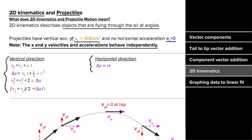Since the vertical acceleration is constant, you can use the kinematic formulas to solve for quantities in the vertical direction — but you can only plug in vertical quantities into these equations. Since the acceleration is zero in the x direction, you can simply use distance equals rate times time to relate quantities in the x direction.